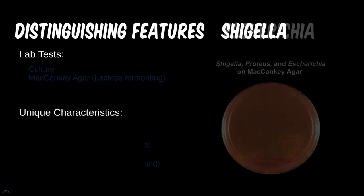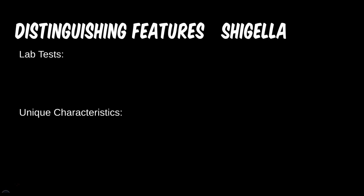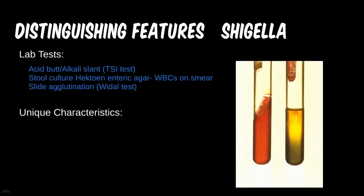Shigella is one that is easily mixed up with other enteric bugs. It has the positive TSI tests like Salmonella as well as slide agglutination testing. The Hektoen agar is the differentiating factor. This medium was actually developed for the purpose of differentiating between these two microbes. Salmonella produces hydrogen sulfide, which turns the medium black, while Shigella, which does not, turns it green.